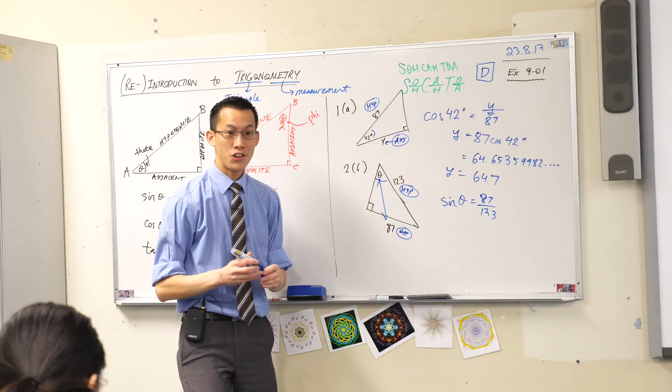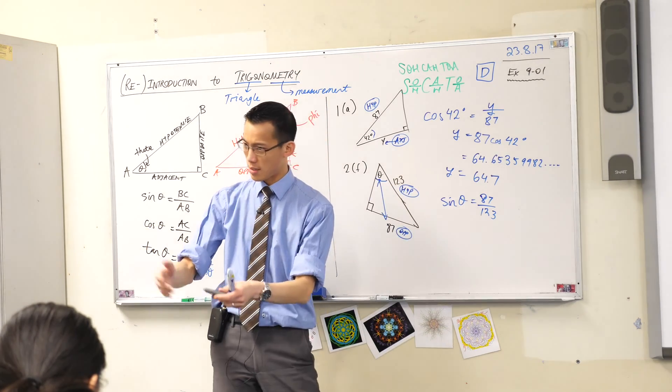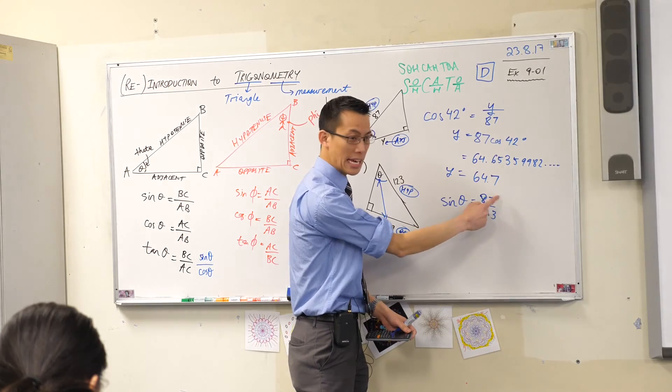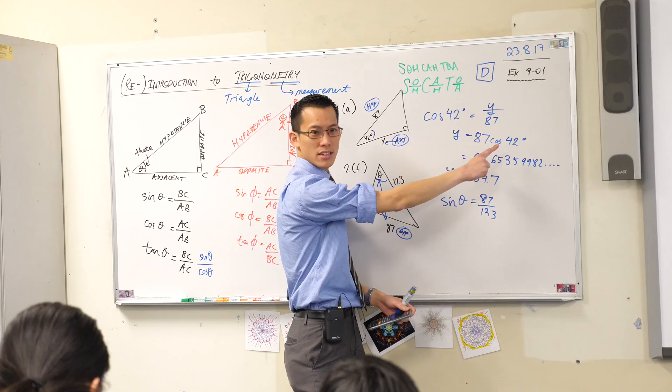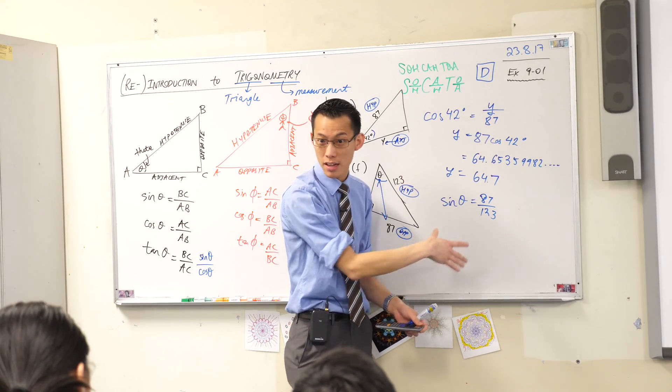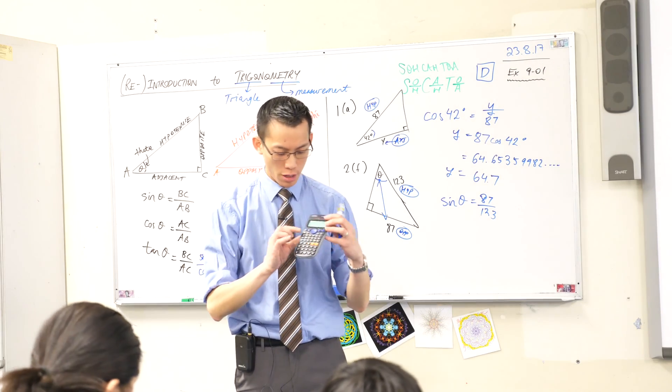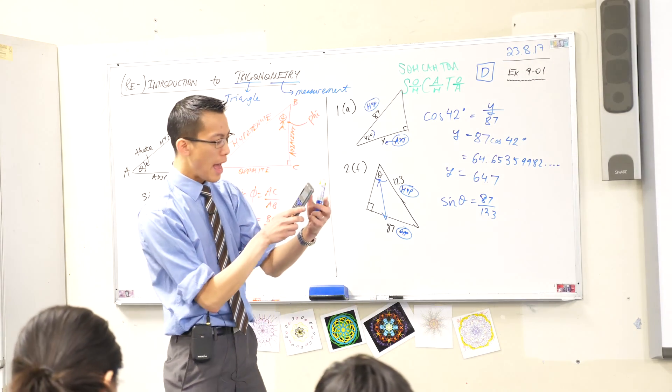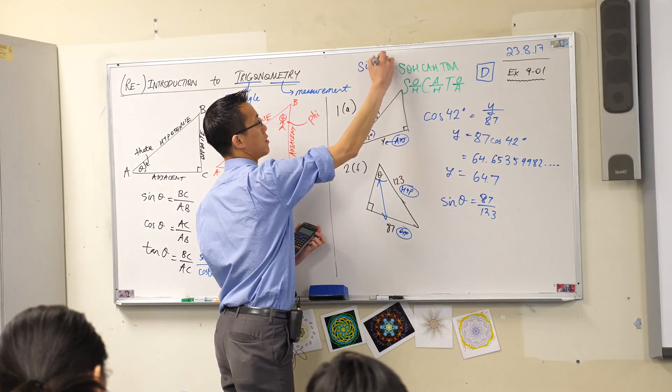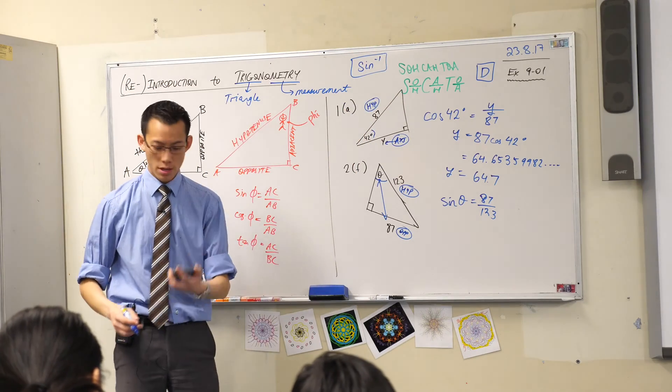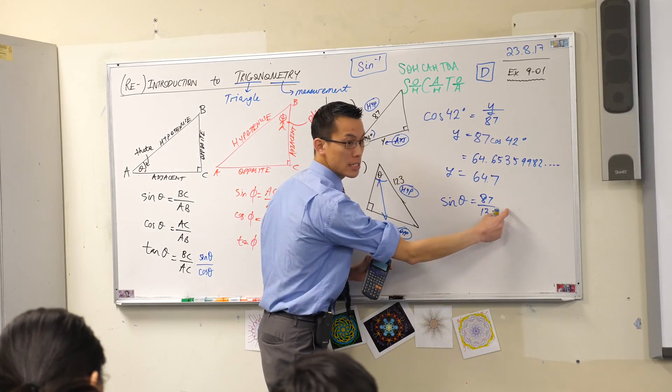I'm going to say sine theta equals 87 over 123. Now at this point, you need your calculator again. I'm not going to - this is an easy mistake to make - I'm not going to say sine of 87 over 123, because actually I'm trying to get rid of a sine, not put one in. Do you see that? I don't want sine on the left-hand side. I just want theta. So on your calculator, the way you're going to do that is you're going to press shift, and then right above sine you'll see this label on your calculator there. So that's what's going to appear on your screen.